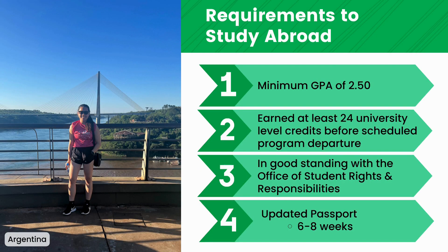Requirements to study abroad: now that you've learned the basics, here are the criteria your application will be reviewed against. A 2.5 GPA or higher is required, and many semester-based programs require students to have earned at least 24 university-level credits by the time they arrive on site. You must be in good behavioral standing with the Office of Student Rights and Responsibilities, and meet any program-specific requirements such as different GPA thresholds, year status, or prerequisite coursework. Lastly, an updated passport takes six to eight weeks to receive after applying or renewing without expediting. Starting May 7, 2025, US travelers flying domestically will need a Real ID or passport — and a big bonus is that passports last 10 years.